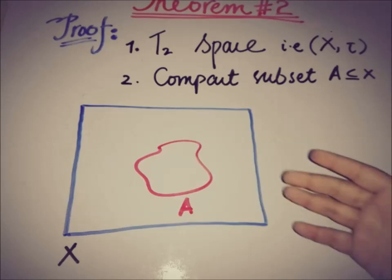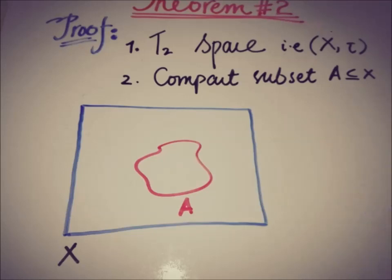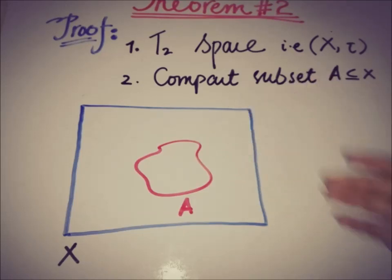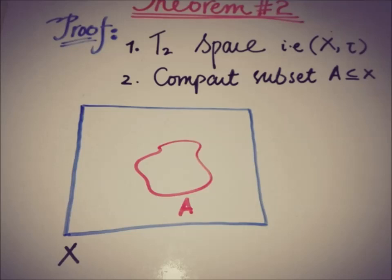There are many ways to show that A is closed. We will use the approach of showing that its complement is open. So we know that the complement of A is everything in X outside of A, and to prove a set is open we pick an arbitrary element from that set.